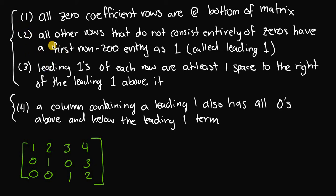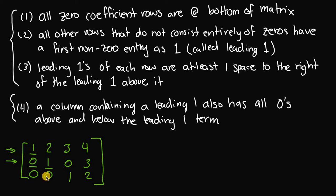Rule two says all non-zero rows have a first nonzero entry of one. Looking at row 1, the first element is a positive one — good. For row 2, the first element is zero, and the first nonzero entry from left to right is a positive one — good. For row 3, the first two elements are zero, and the first nonzero entry is a positive one — good. So this matrix satisfies rule two.